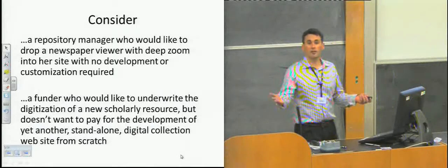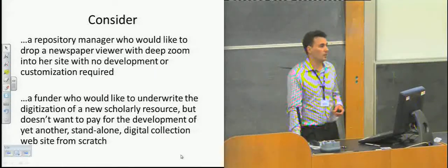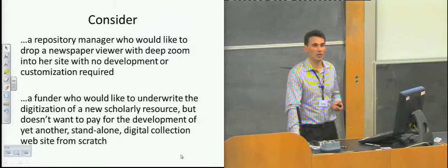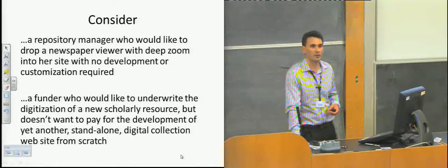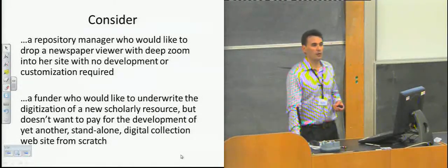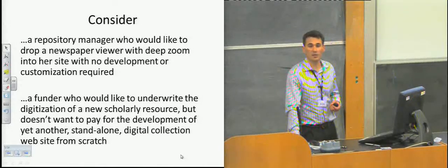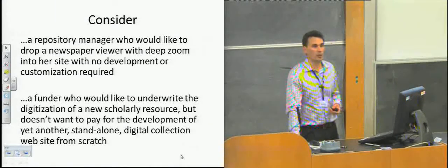From a lot of this room's perspective, you've got a lot of rich content. You've started digitizing newspapers. You would like to develop and deploy a newspaper viewer that supports deep zoom into your site. That's a non-trivial exercise at this point. It's going to require a substantial amount of development. How could we make this more efficient as a community? From a funder, whether they're paying to digitize something or expose a new set of digital resources, could we start mixing and matching of existing components? So really the content development and the content delivery can really be separated out into separate concerns.